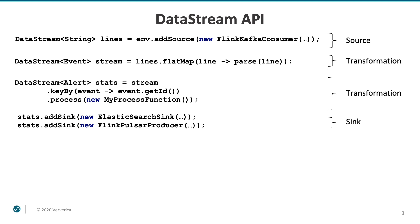We start with adding a source. Flink can connect to various external components, but the ones that are best suited are message brokers with replayable topics, such as Apache Kafka. Flink actually takes the offsets or pointers that indicate which messages were consumed and uses them for achieving at least once and even exactly once end-to-end processing guarantees. We will later see how those offsets participate in the recovery mechanism.